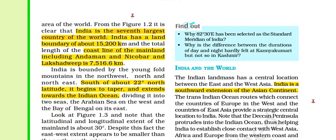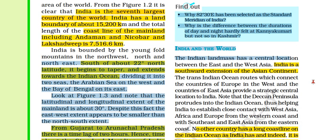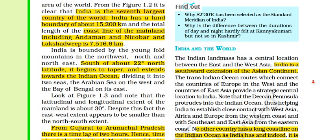Talking about the coastline — if we exclude the Andaman and Nicobar Islands and Lakshadweep, it is around 6,100 kilometers. But if we include the coastline of the islands as well, it is 7,516.6 kilometers.